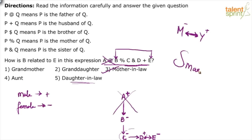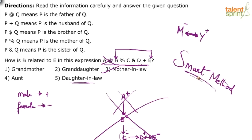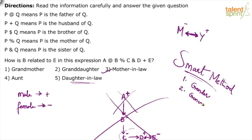Now what is the smart way of solving this question? Drawing the family tree was the traditional method, but we can answer faster without it. The smart method requires focusing on only two points: gender and generation gap. If you focus on these two, you may get the answer without drawing the family tree at all. Generation gap between you and your father is one, between you and your grandfather is two, between you and your sibling is zero, between you and your spouse is zero, and between you and your nephew or daughter-in-law is one.